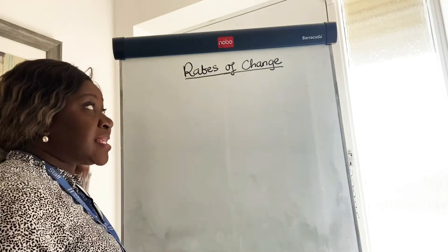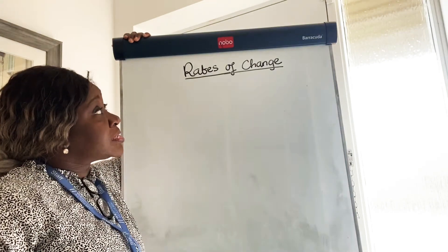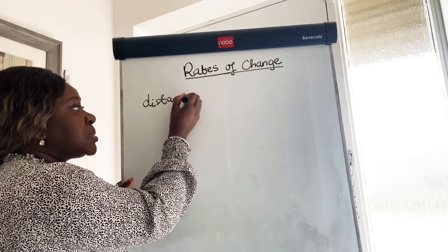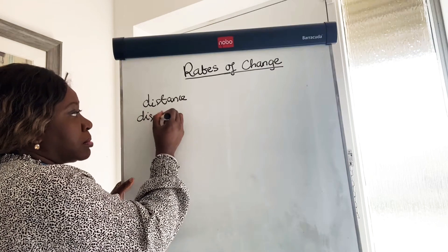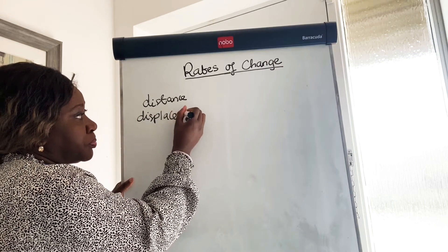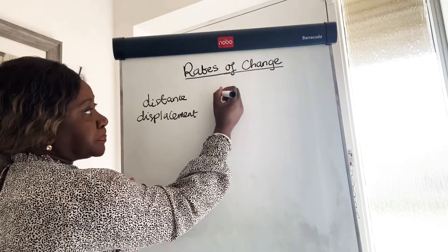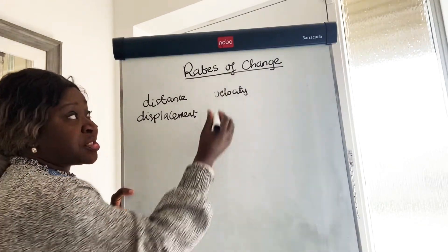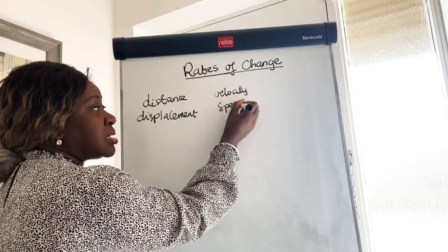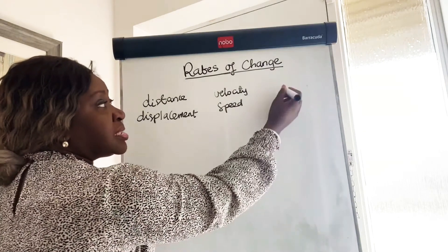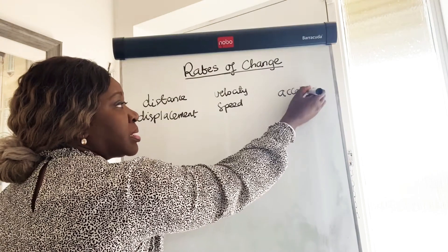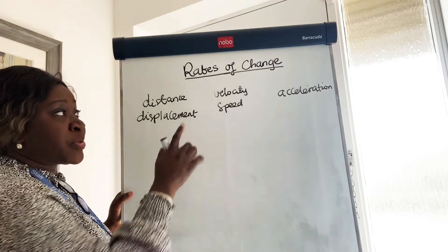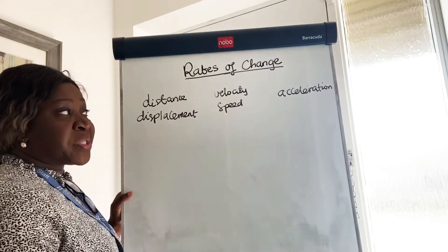Hello and welcome back. In this lesson, we're going to be looking at rates of change. Distance can be written as displacement and velocity can often be referred to in your question as speed. Similar but slightly different, and the last one would be referred to as acceleration. So those are the three things we're going to be looking at.